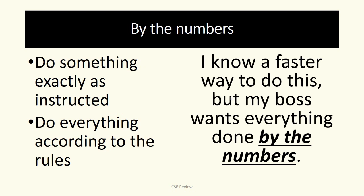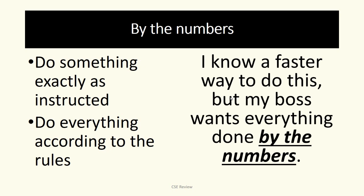So there are bosses like this, right? The sentence is: I know a faster way to do this, but my boss wants everything done by the numbers. If you want someone to do things by the numbers, it means you want to use exactly what the rules are, exactly what the instructions are. So these are people who are that strict.